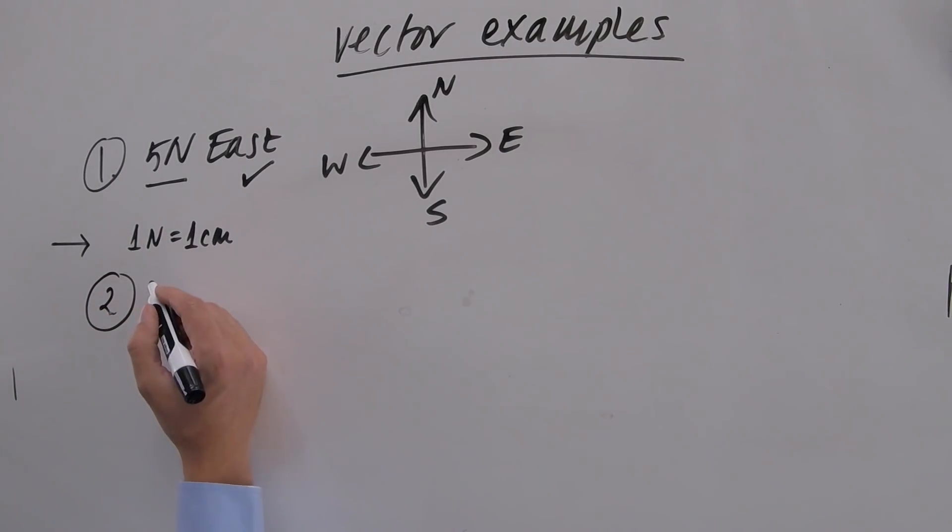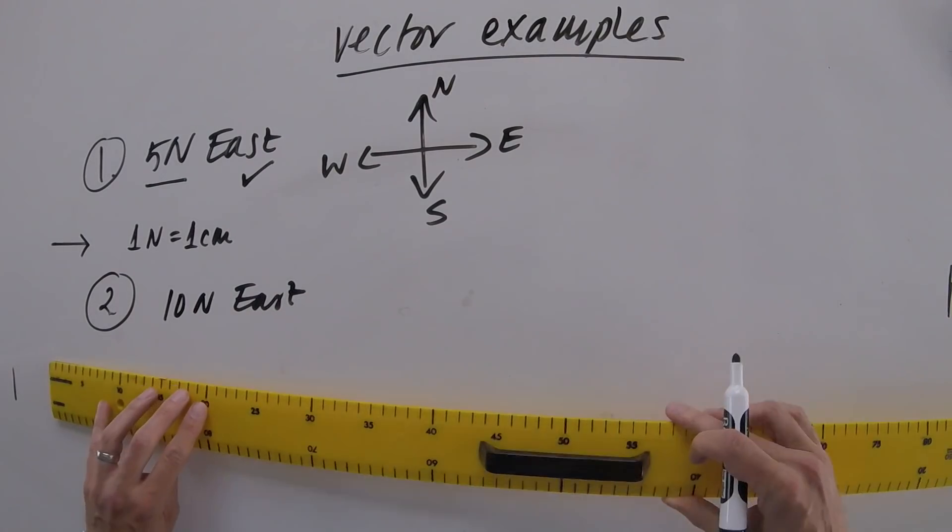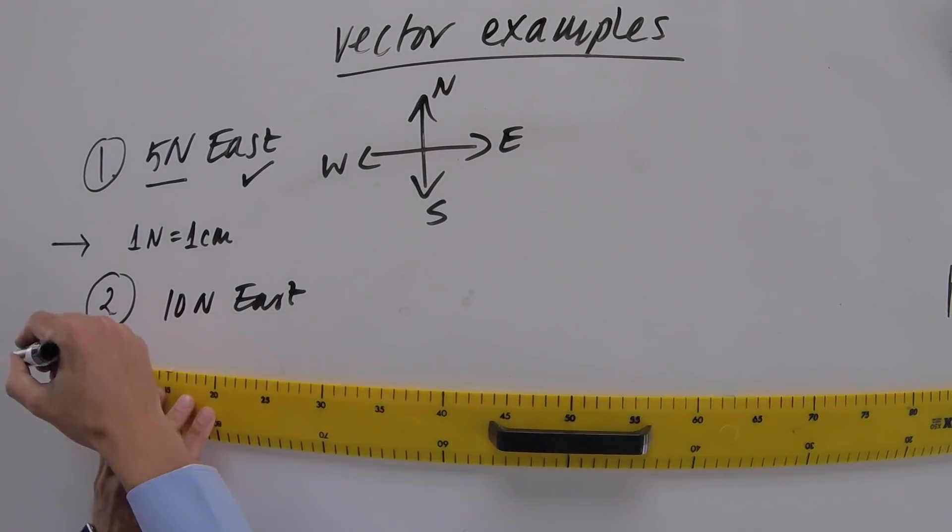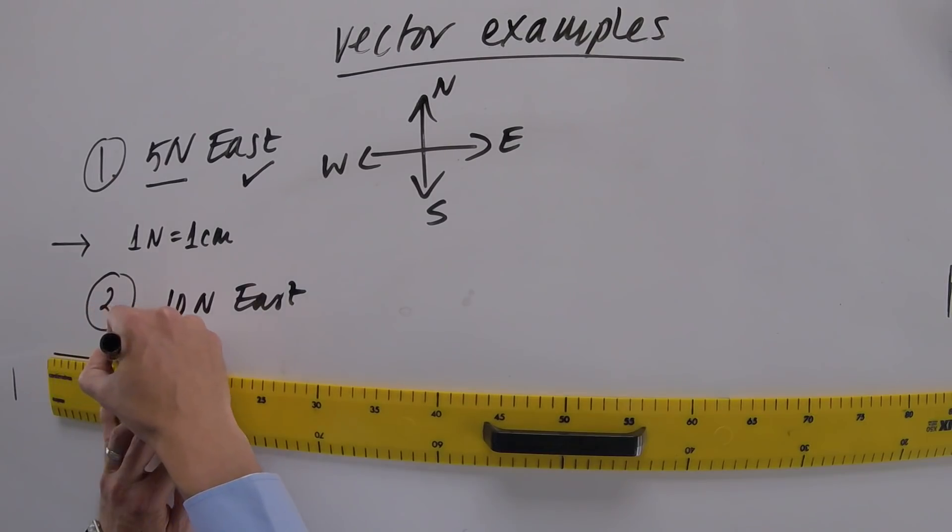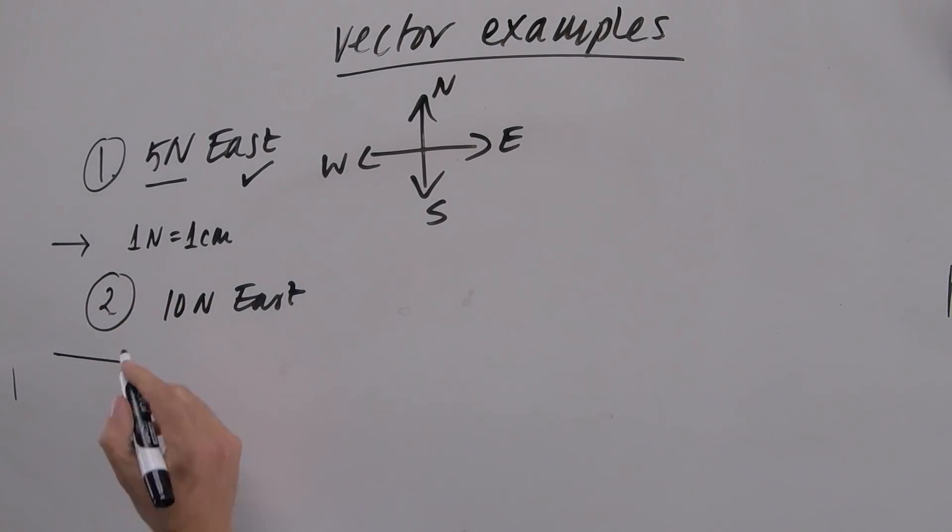Question number two. If we go here, ten newtons east, just to get the differences here. So this time, we're still going to the right. But instead of my five newtons, we're going across ten newtons. And again, one centimetre equals one newton.